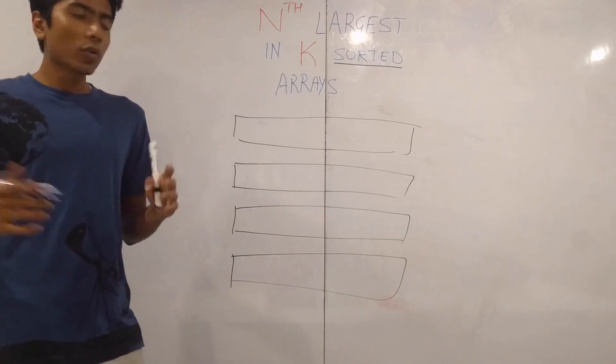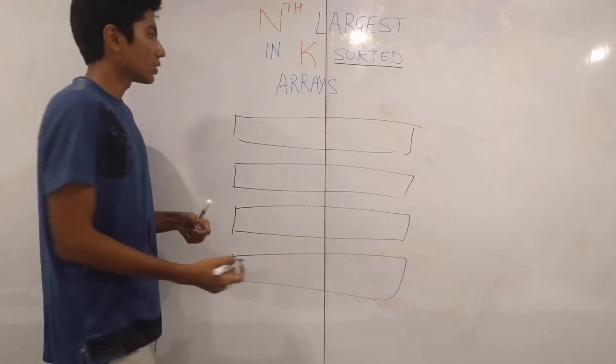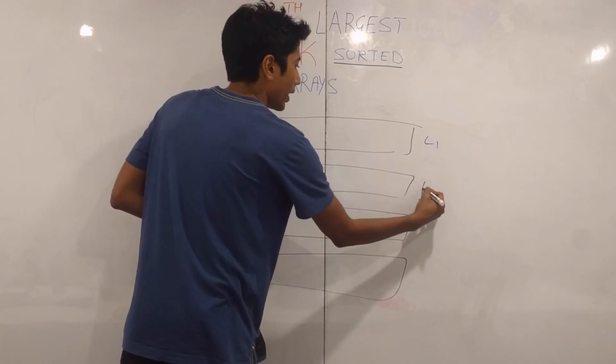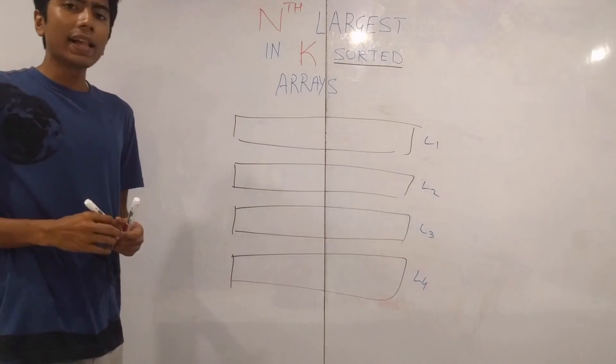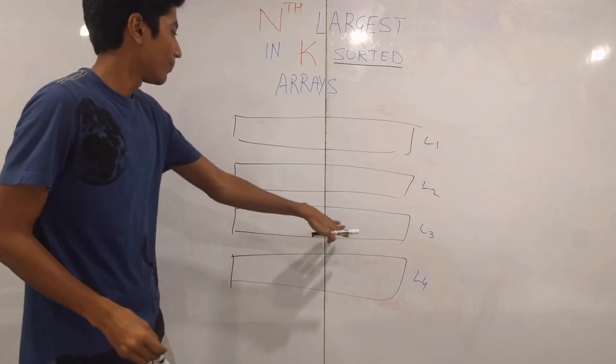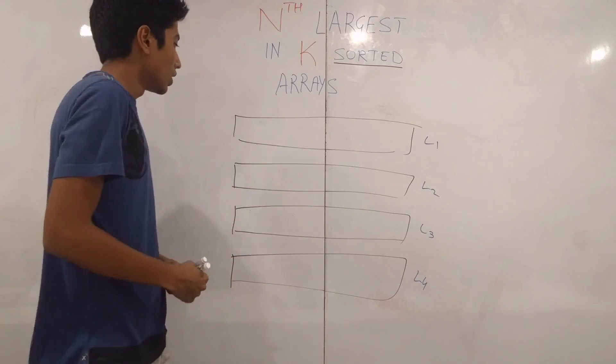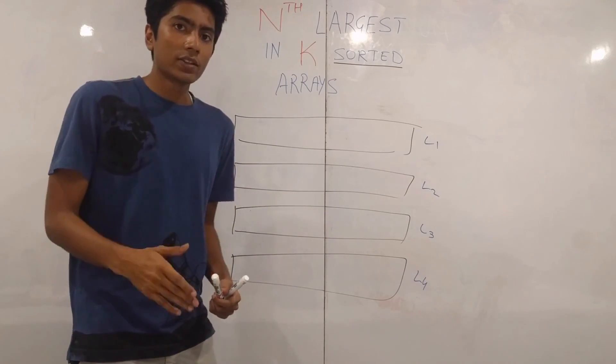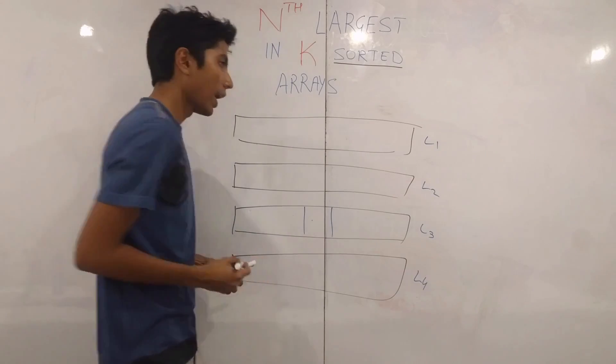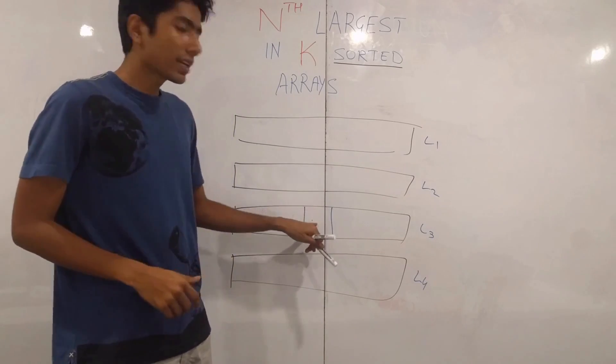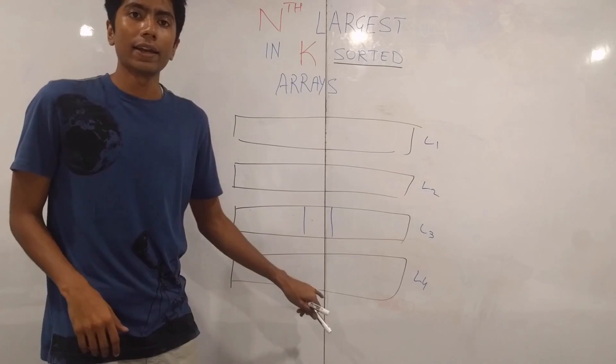So what I'm going to do is I'm going to assign them lengths which is the size of the arrays which is L1, L2, L3, L4. And let's say L3 is the largest array that you have. So you go to the center of L3, very similar to binary search. You go to the center of L3 and you pick this element and binary search it on all other arrays.